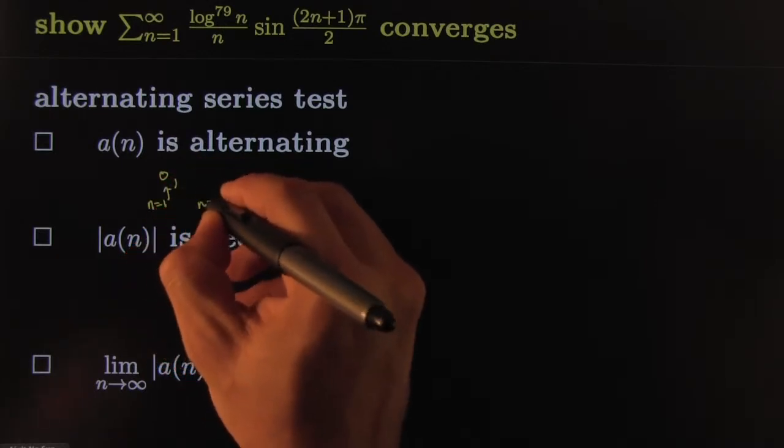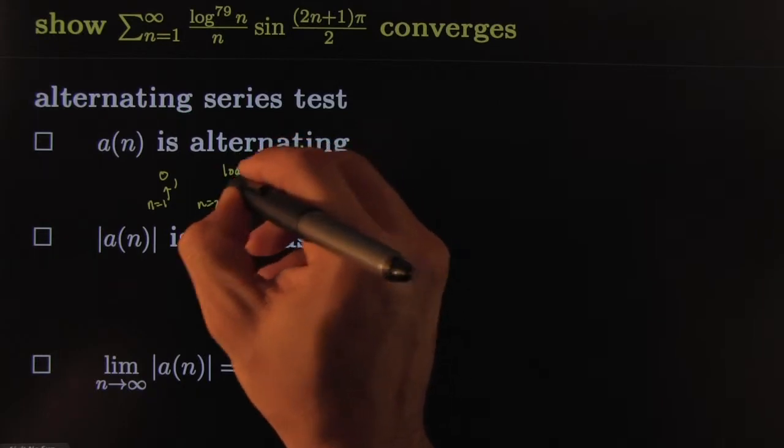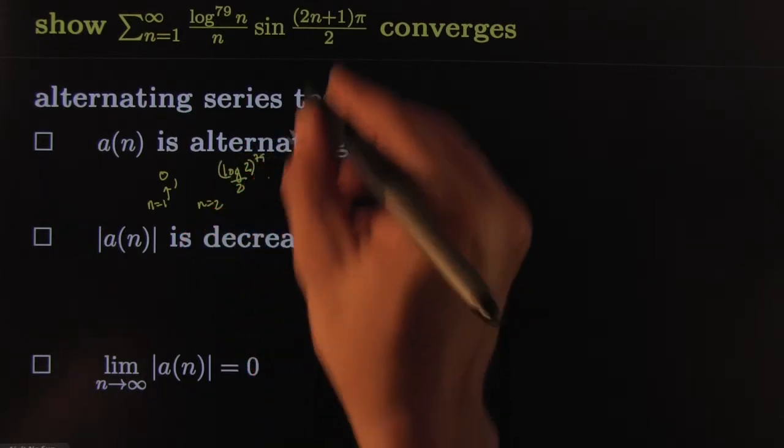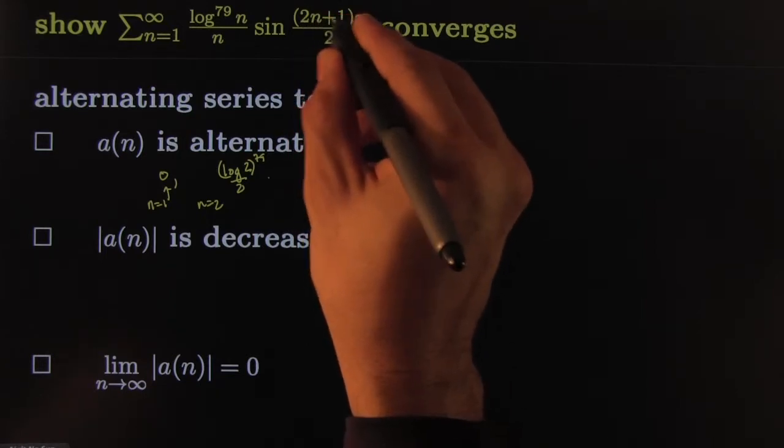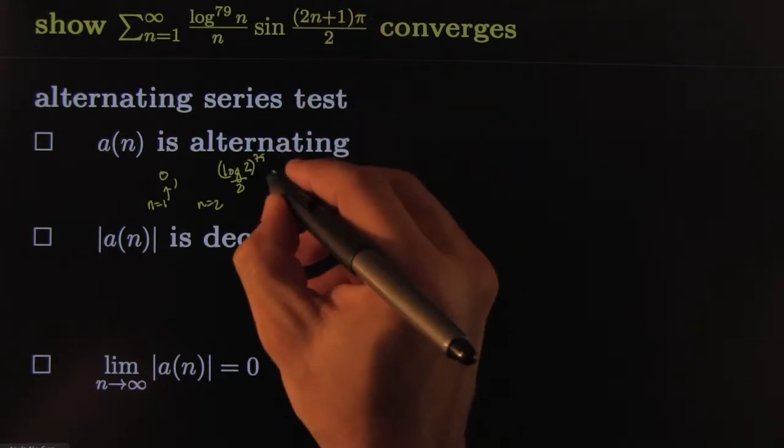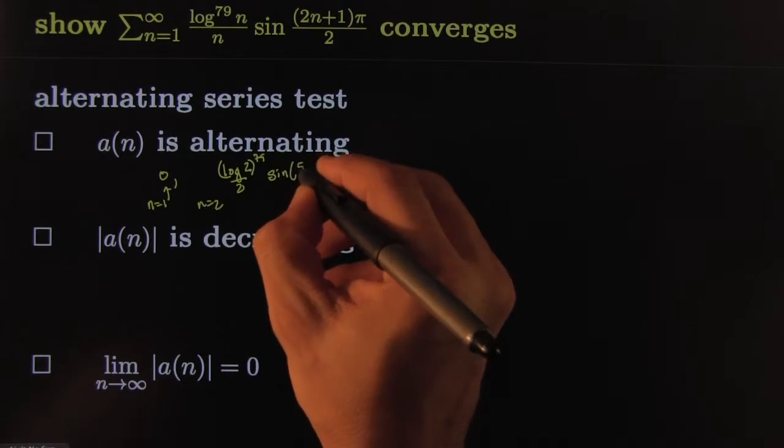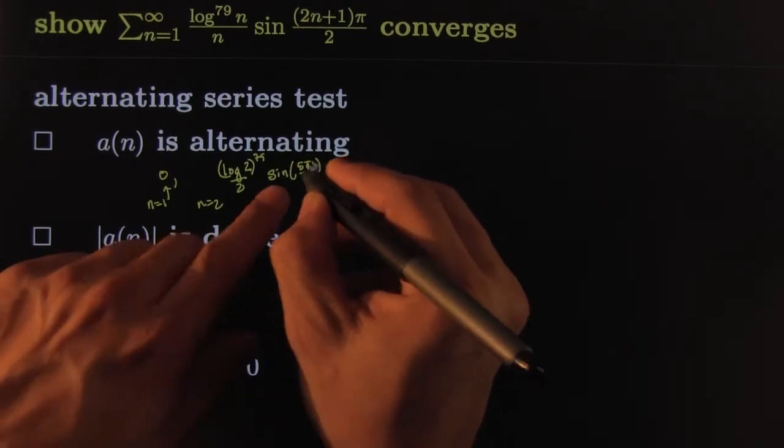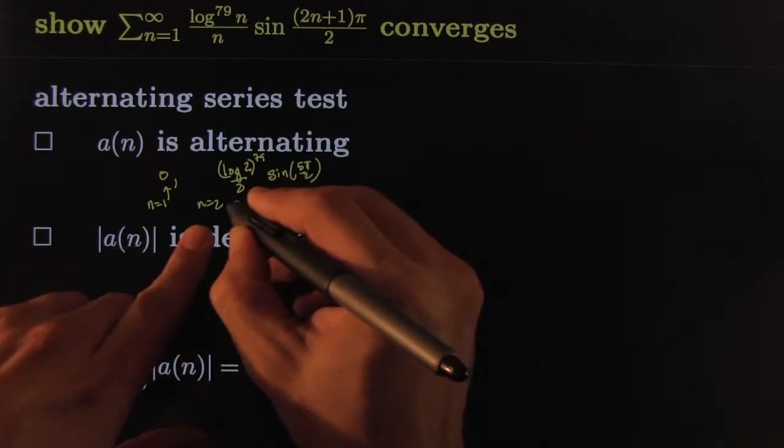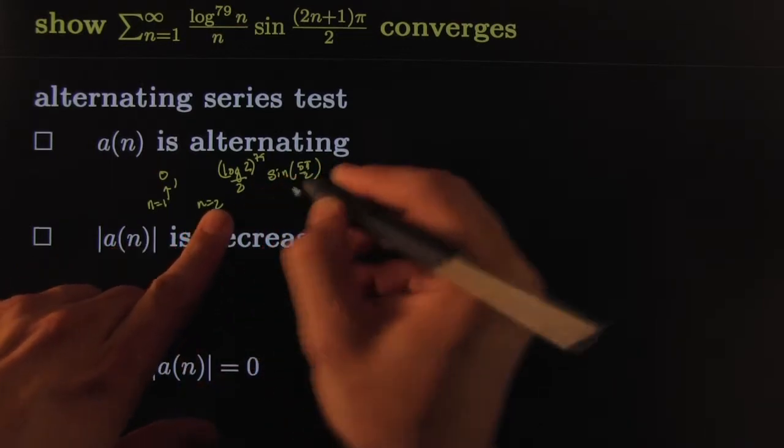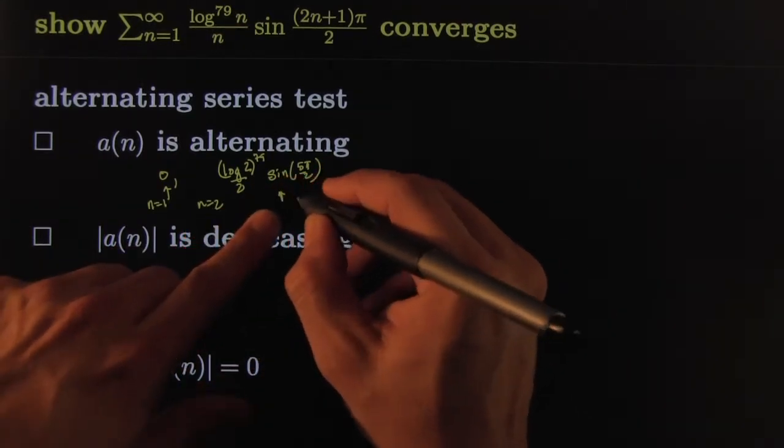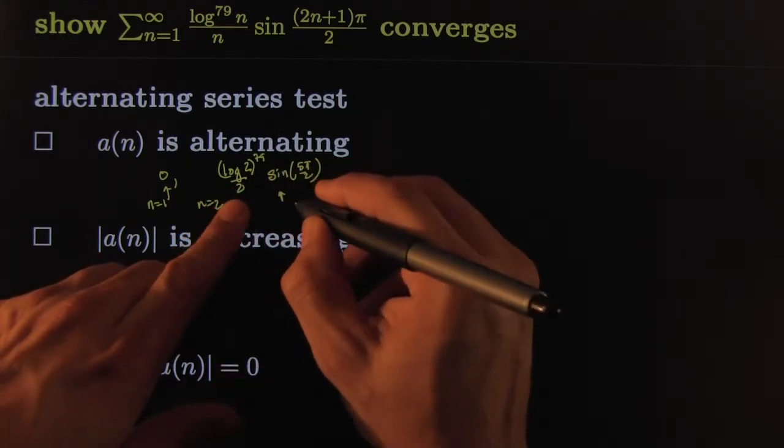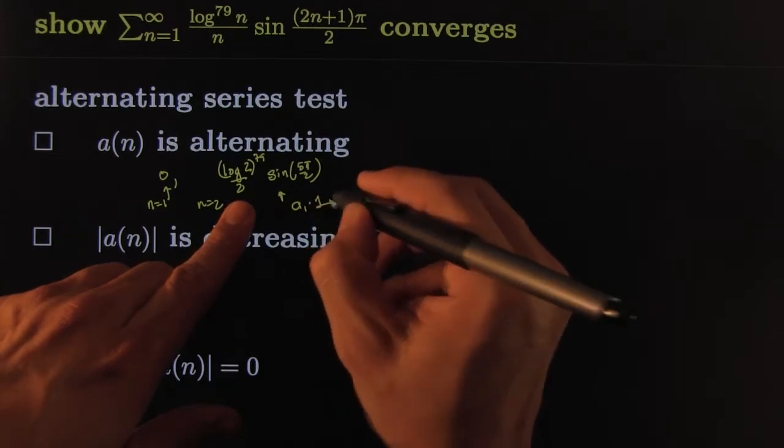How about for n equals 2? You'd have to plug it in there. You'd have log 2 over 2, raised to the 79th power, times sine. For 2, this would be 2 times 2 is 4 plus 1 is 5. That would be sine 5 pi over 2, which is a half pi over 1 period. So that would give you 1. So this is equal to that number times 1. I'll just call it a1 times 1.